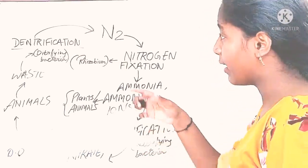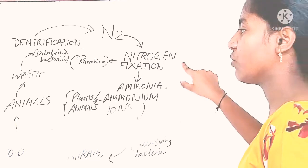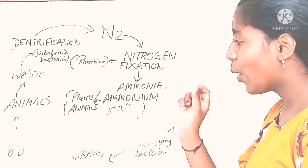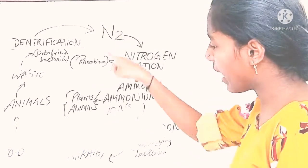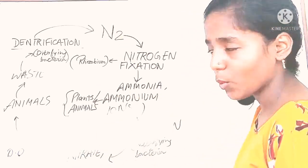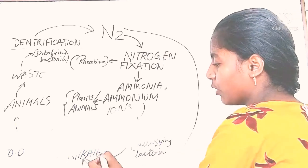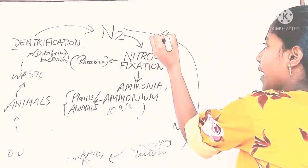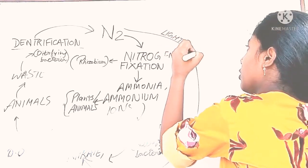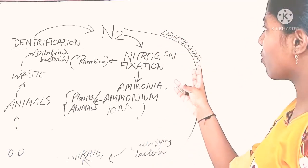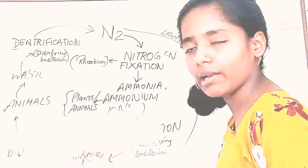One more thing — there is also a step that moves directly from N2 to nitrate and nitrite. You can draw this line going directly to nitrate and nitrite. This process is lightning — lightning is also a process by which N2 can go directly to nitrite or nitrate.